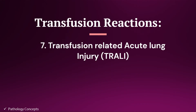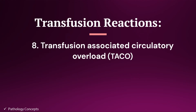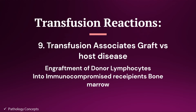Seventh is transfusion-related acute lung injury, also called TRALI. It occurs because antibodies in the donor product react with antigens in the recipient, leading the immune system to release mediators which cause pulmonary edema. The transfusion-associated circulatory overload, also called TACO, occurs when transfusion causes hypervolemia, and hypervolemia causes circulatory overload. The eighth is transfusion-associated graft versus host disease, which results from engraftment of donor lymphocytes — commonly found in cellular blood products — into an immunocompromised recipient's bone marrow.